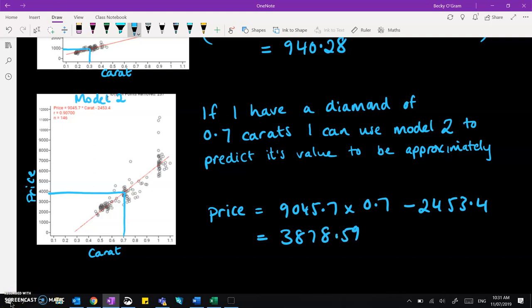To finish off that sentence, we're going to round this appropriately. So if I have a diamond of 0.7 carats, I can use model two to predict its value to be approximately $3,880.